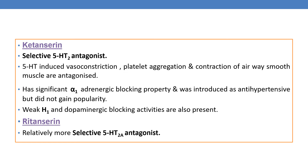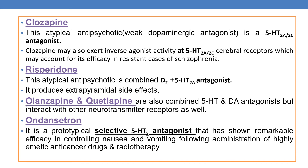The next drug is ritanserin, which is a relatively more selective 5-HT2A antagonist. The next drug is clozapine, an atypical antipsychotic which has weak dopaminergic antagonist activity. It is a 5-HT2A/2C antagonist and may also exert inverse agonist activity at 5-HT2A/2C cerebral receptors, which may account for its efficacy in resistant cases of schizophrenia.